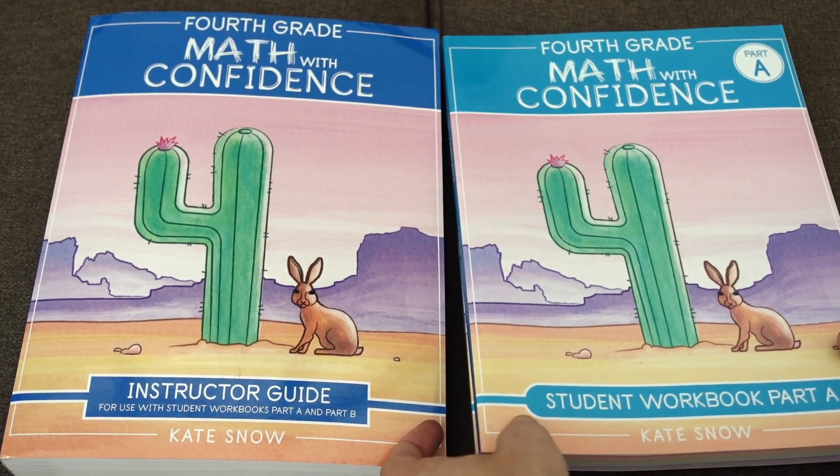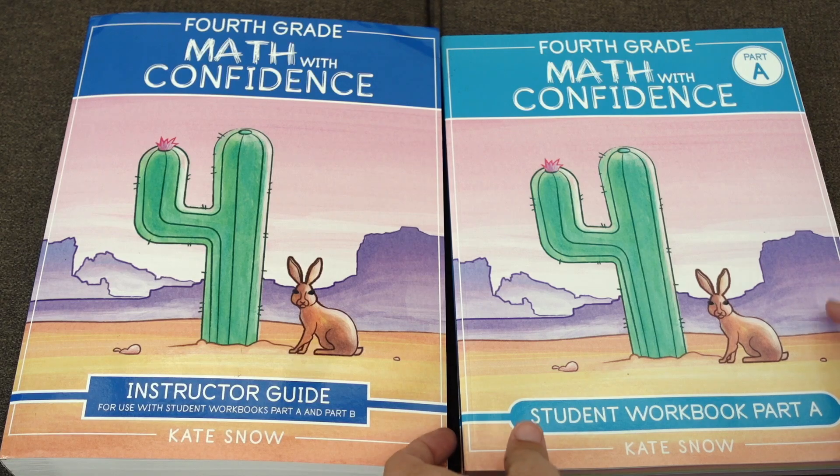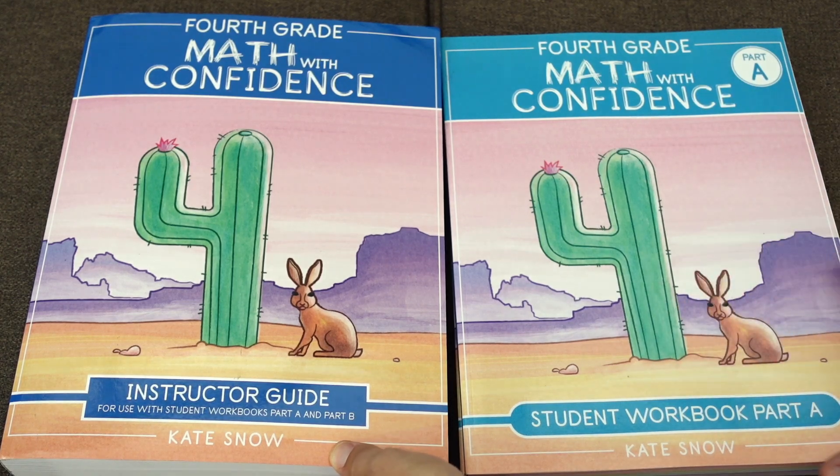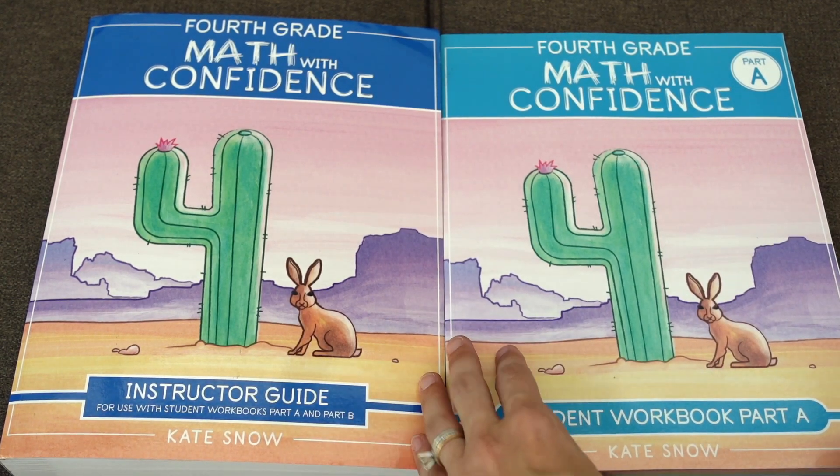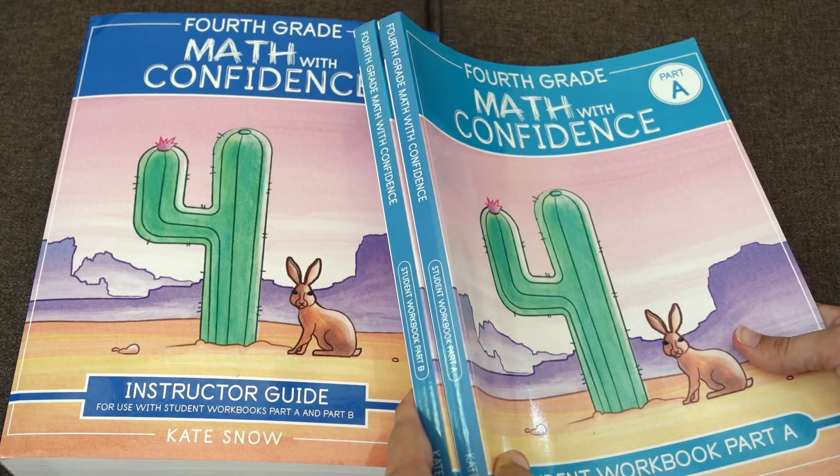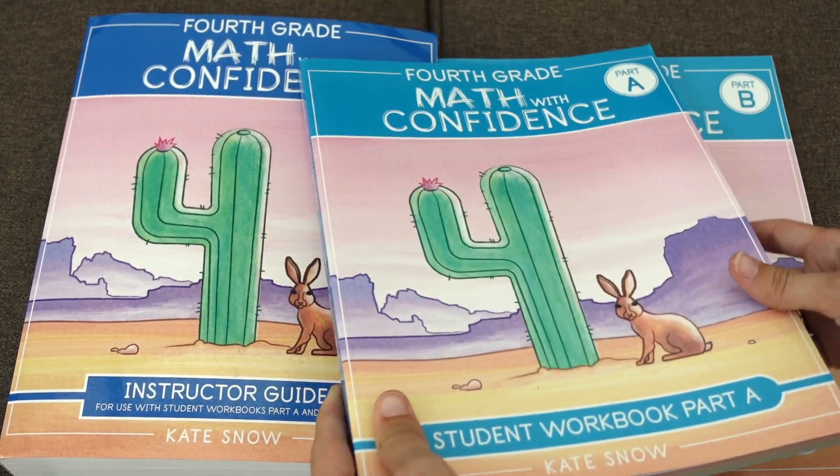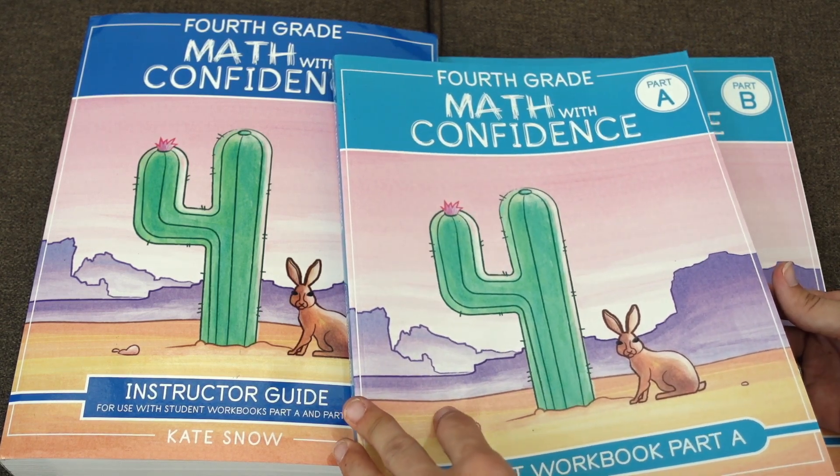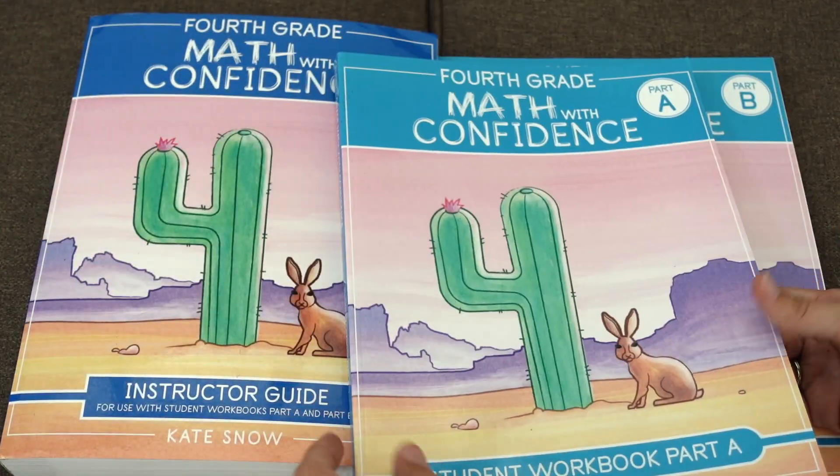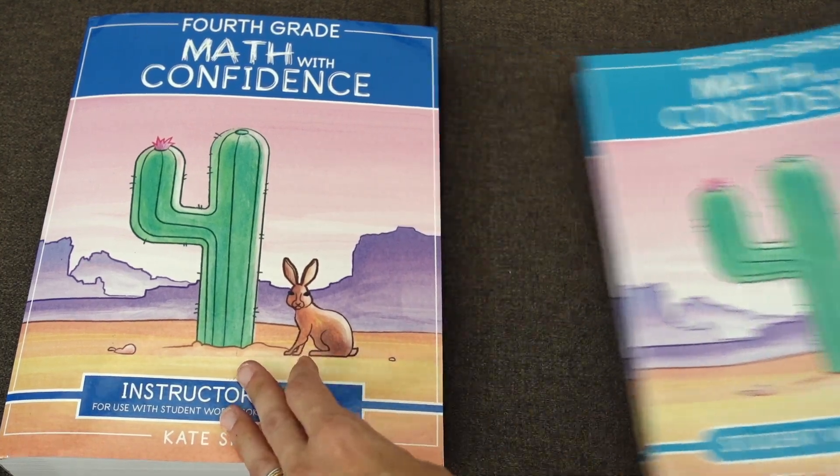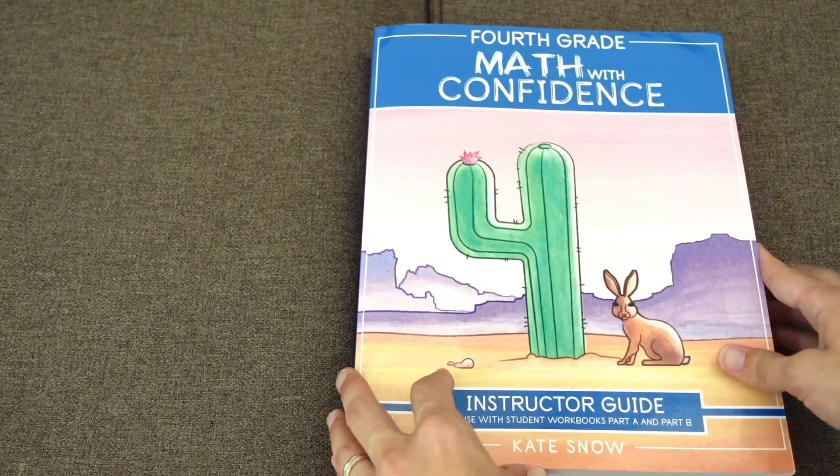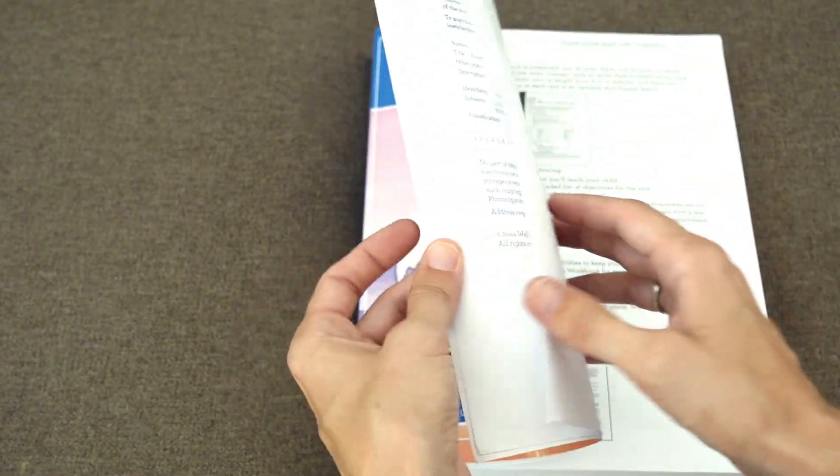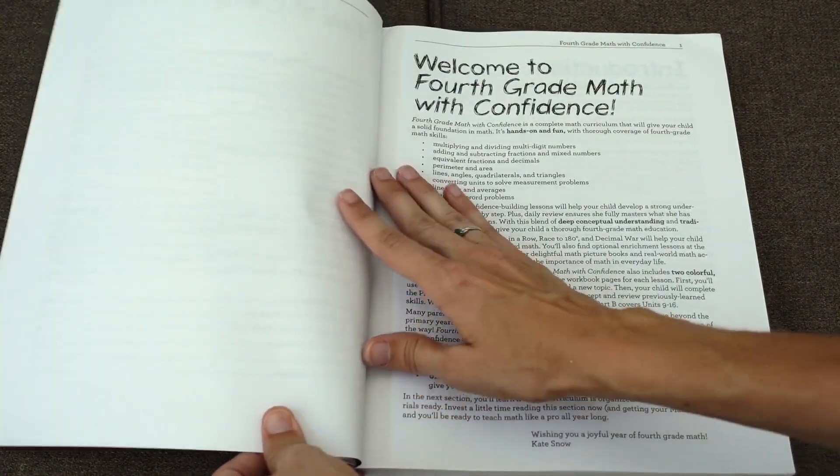So I'll walk through what you need for this and what to expect from this curriculum. There is an instructor's guide. You do need the instructor's guide. You cannot use this as a workbook only curriculum, and there are two student workbooks. They're broken into two I think just to make it a little bit lighter, easier for your student to carry around or easier to fit onto their desk or their little shelf of workbooks. So let's walk through what to expect from fourth grade Math with Confidence and I will also walk you through a lesson to give you a detailed look and expectation of what a Math with Confidence lesson is like.